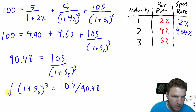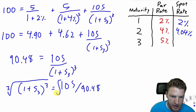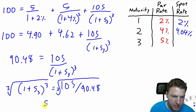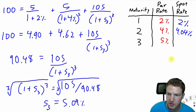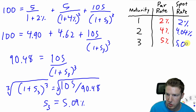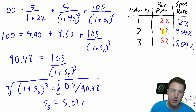Multiplying both sides by 1 plus S3 cubed and dividing by 90.48, we get 1 plus S3 cubed equals 105 over 90.48. Taking the cube root of both sides and subtracting 1, we find that the three-year spot rate is equal to 5.09%. So there you have it — we just bootstrapped the actual spot rate curve from the par rate curve.